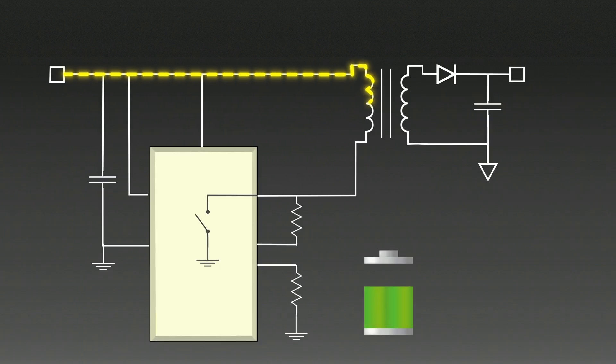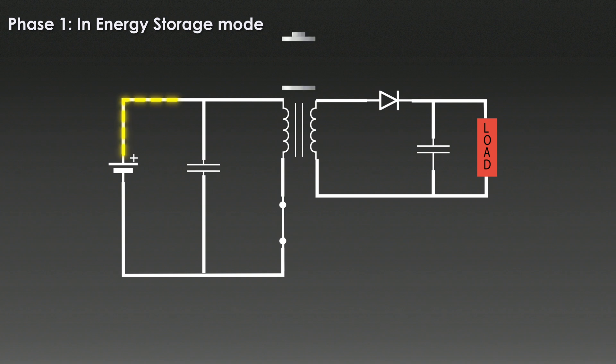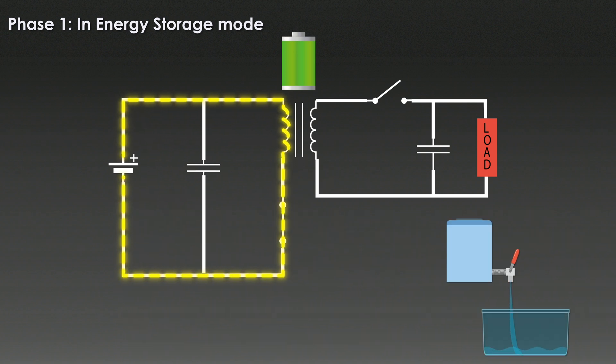The flyback converter works in two main phases. First, energy storage phase and second, energy transfer phase. In energy storage mode, when the MOSFET is turned on by the controller IC, current flows to the primary winding of the transformer. The transformer's primary winding stores energy in the form of magnetic field. During this phase, the secondary side of the transformer is disconnected because the rectifying diode is reverse biased. Hence, no energy flows to the load. The energy here acts like a bucket being filled with water. The energy is temporarily stored and will be transferred during the next phase.